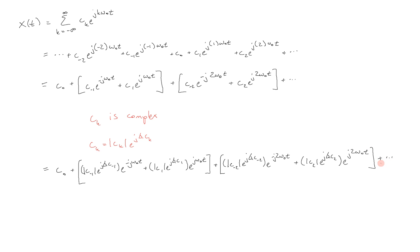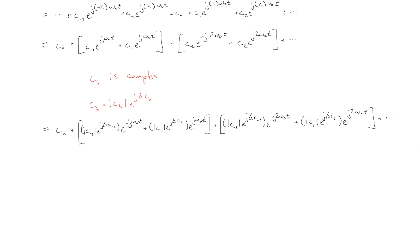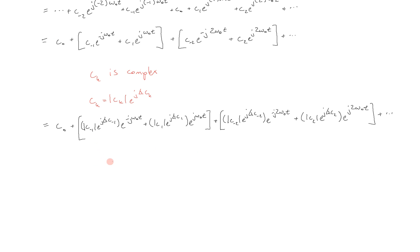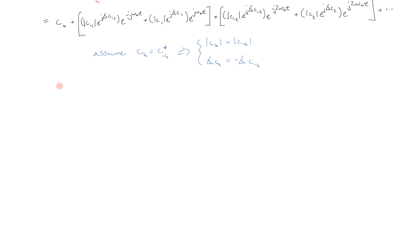It might look like we actually made things more complicated, but this is going to simplify in just a moment, so bear with me. One thing we're going to do is make an assumption: that c sub k is equal to the complex conjugate of c sub negative k. What this means is that the magnitude of c sub k equals the magnitude of c sub negative k, and the phase of c sub k is equal to minus the phase of c sub negative k. So there's an even symmetry on the amplitude and an odd symmetry on the phases. The reasoning for this is presented in my other video on Fourier series. In this video, we're just trying to get some intuition for why we use the form that we do. Using this assumption, we can further rewrite our previous equation.